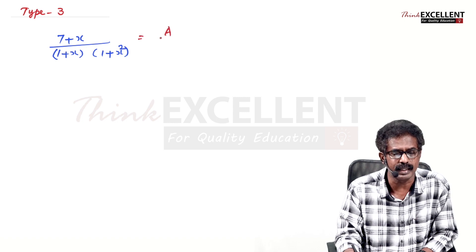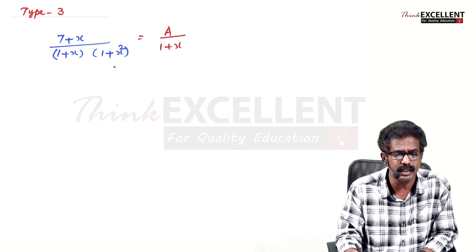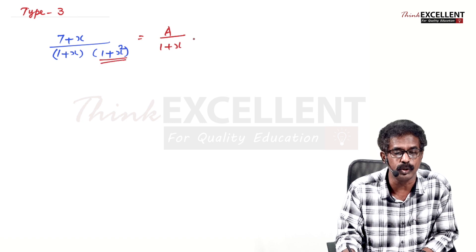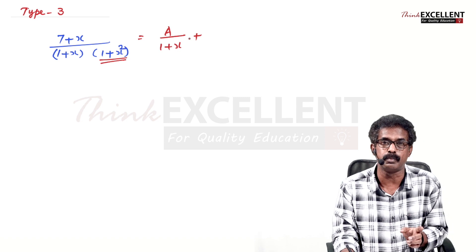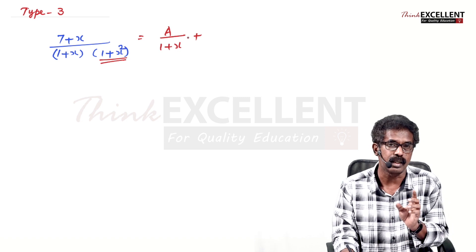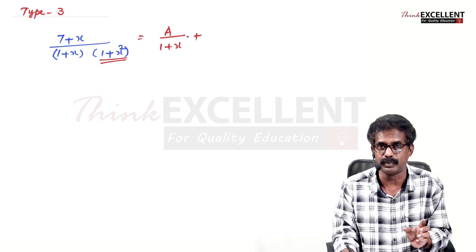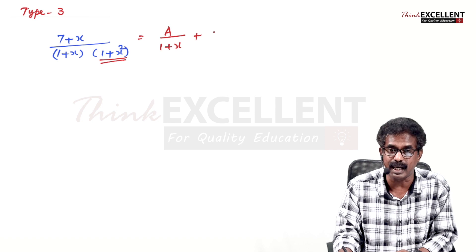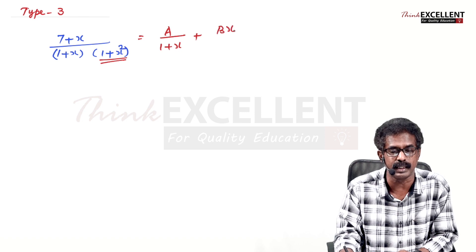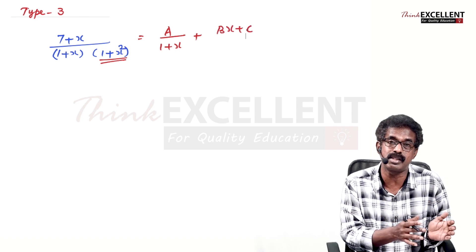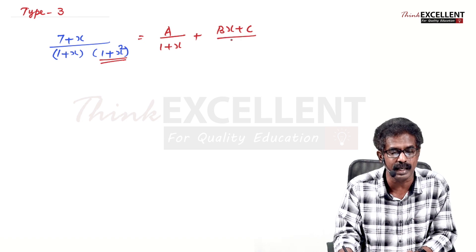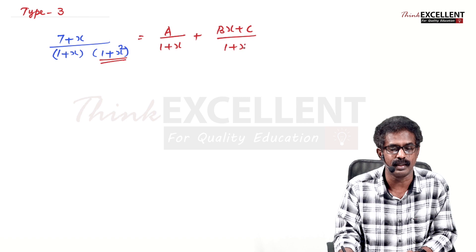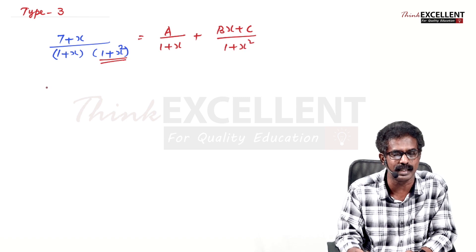Since the first factor is linear, you write A/(1+x). The second factor is quadratic, so for its numerator you write a linear expression - a constant and an x term. Since A is already used, write Bx+C. So the second term is (Bx+C)/(1+x²). Now take LCM in the usual method.